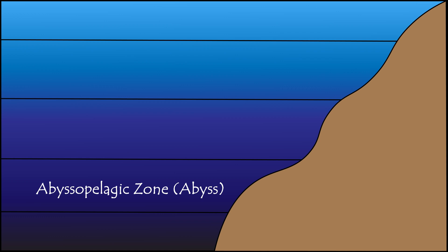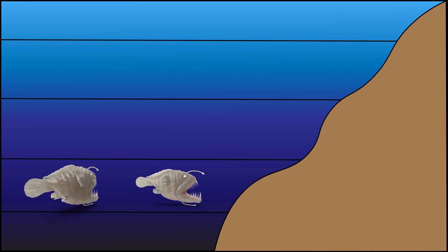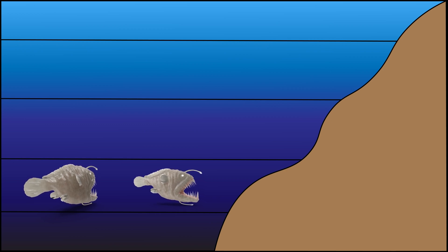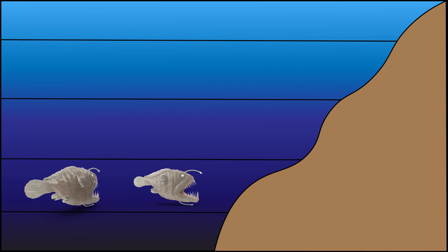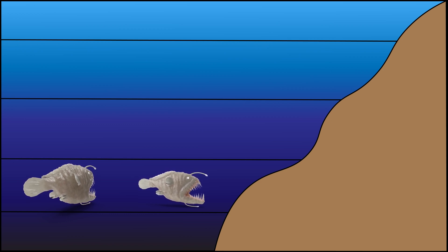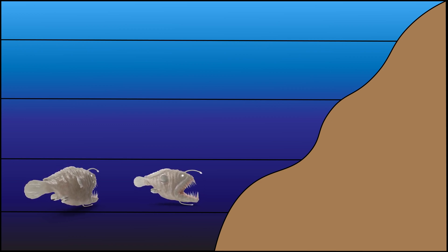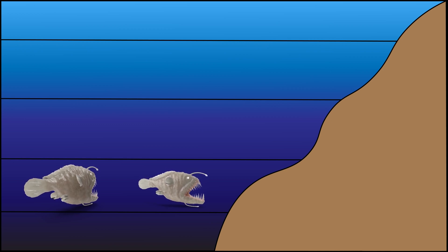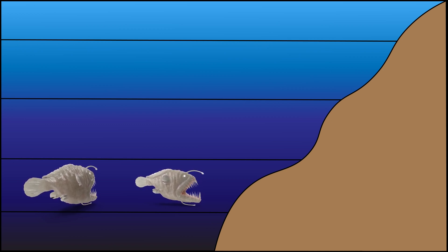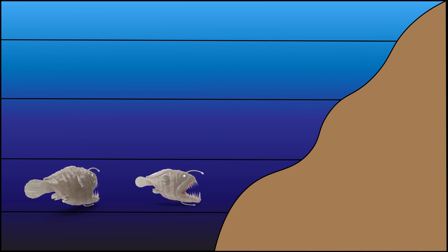The fourth layer of the ocean is called the abyssopelagic zone, or the abyss. Extending from 4,000 meters to 6,000 meters, or 13,123 to 19,685 feet, this zone is characterized by very low temperatures and high pressures. Deep sea trenches and abyssal plains are found in this layer.